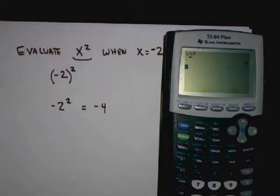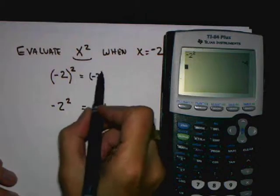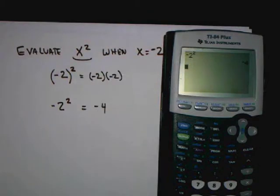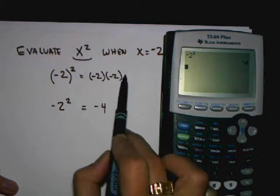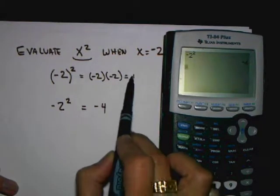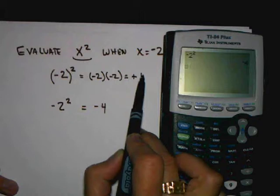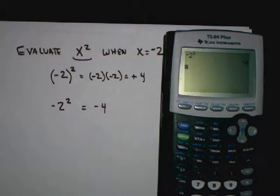Well, this expression here, negative 2 in parentheses squared, what this one means is negative 2 times negative 2. That's what squaring means. And when you take a negative times a negative, your answer should give you a positive. And 2 times 2 would give you 4.